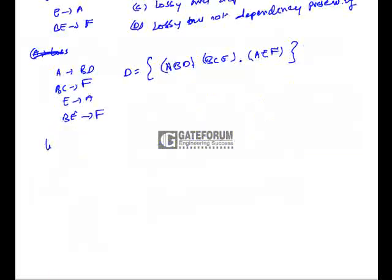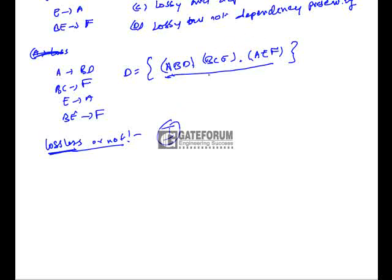Let us check the first property: whether the decomposition is lossless or not. The first condition is to check if all the attributes present in the original relation are present in the decomposition. If not, the decomposition is lossy. Here the attributes are A, B, C, D, E, F, and all of them are present in the decomposition ABD, BCE, AEF. So the first condition is satisfied.